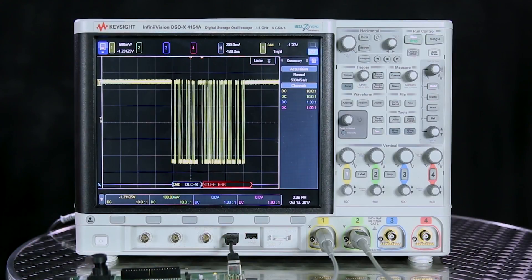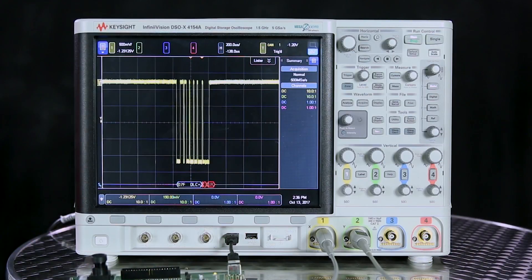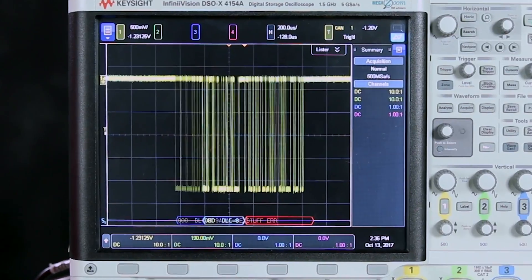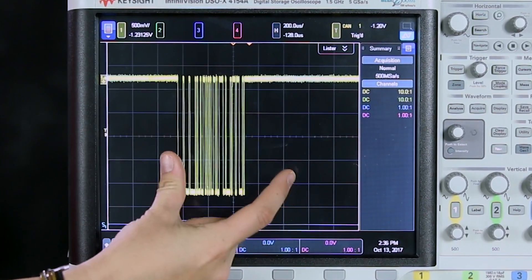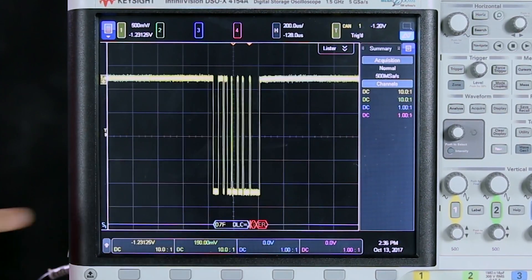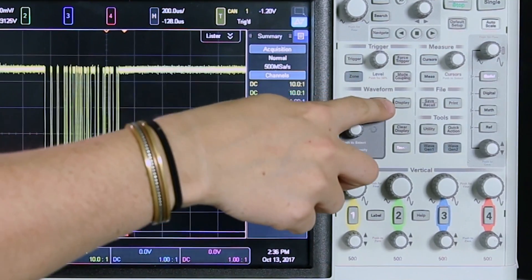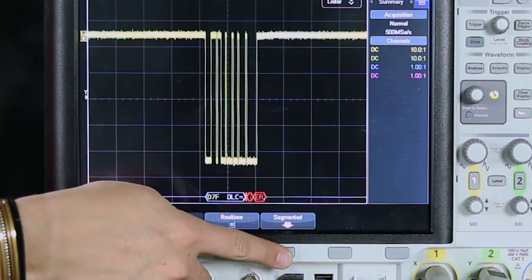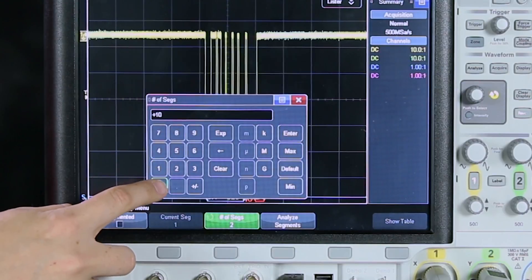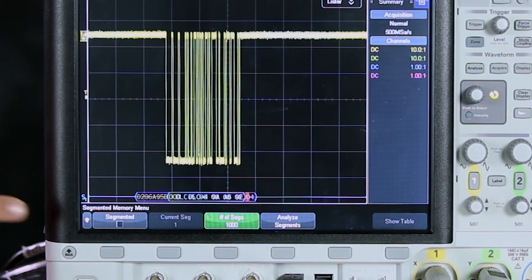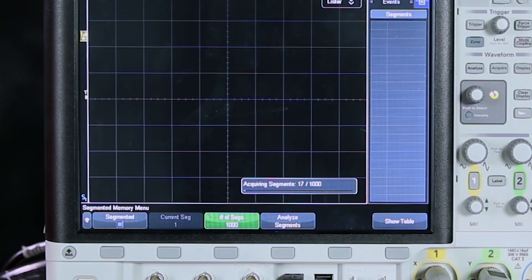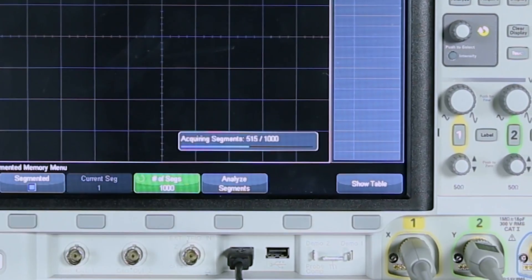This can be a tricky concept to understand and I think the easiest way to learn is by doing it on the scope. All I have to do to set up segmented memory is to set up a stable trigger on a single packet on the screen. So you can see I already have one packet centered on the screen here that I'm already triggering and decoding on. Now we just go into the acquire menu and select segmented then change the number of segments to 1000 and press the segmented soft key to turn it on. Now you can see it's acquiring all the segments.